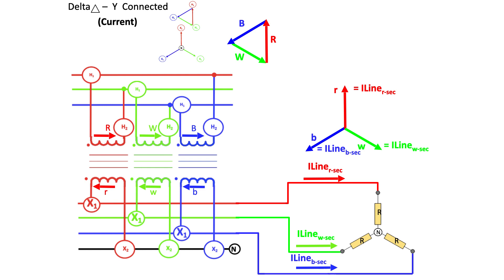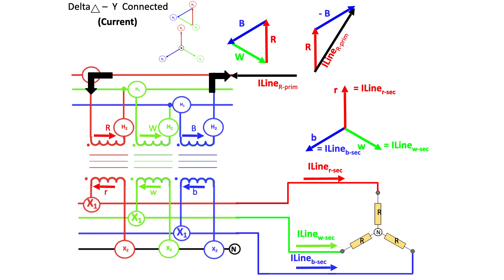Once the load is connected to the secondary, it will draw current from the primary lines. Looking at the red phase line, for example, it will be made up of the current flowing in the red phase transformer winding minus the current flowing in the blue phase transformer. Adding those two vectors or phasors together gives us the total current flowing in the red phase primary line, which forms an isosceles triangle whose contained angles are 120 and two at 30 degrees.